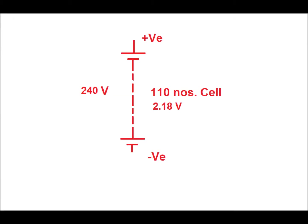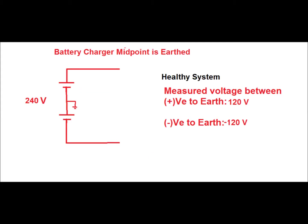Normally in most substations, the DC voltage available for protection and all other auxiliary supply is 240 volt DC. In most cases there are 110 cells, each operating at approximately 2.18 volt, giving a total voltage of 240 volt DC. The battery charger midpoint is normally earthed.